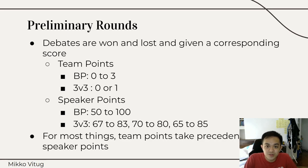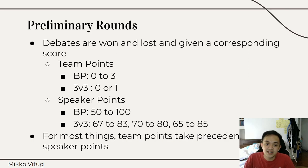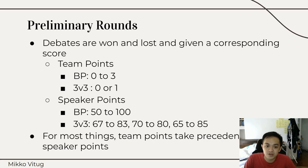Tournaments start with preliminary rounds. Note that these preliminary rounds are won and lost and given a corresponding score. You have team points from 0, 1, 2, or 3, depending on whether you finish 4th, 3rd, 2nd, or 1st. In 3v3, you have 0 or 1 — just whether you lost or won. You also have speaker points, which are individual. These individual speaker points can have many different ranges. In BP, most commonly they're 50 to 100. In 3v3 there are many differences — you can have 67 to 83 like in Asians, 70 to 80 like in Australs, or 65 to 85 in some Asian tournaments and in World Schools, if I'm not mistaken.